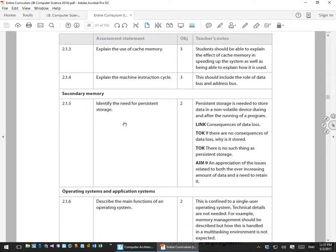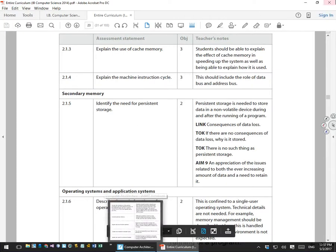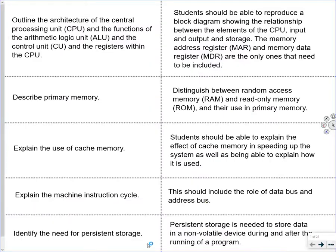The key points from the curriculum have been transferred here. First: outline the architecture of the central processing unit (CPU) and the functions of the arithmetic logic unit (ALU), the control unit (CU), and the registers within the CPU. Students should be able to reproduce a block diagram showing the relationship between elements of the CPU, input-output storage, memory address register (MAR), and memory data register (MDR).